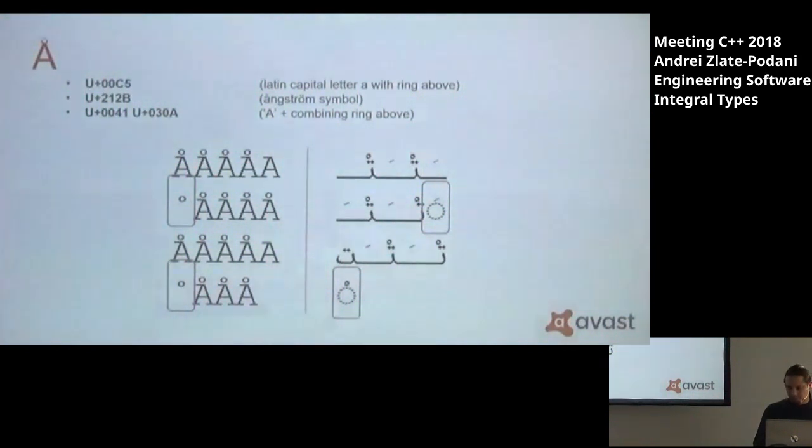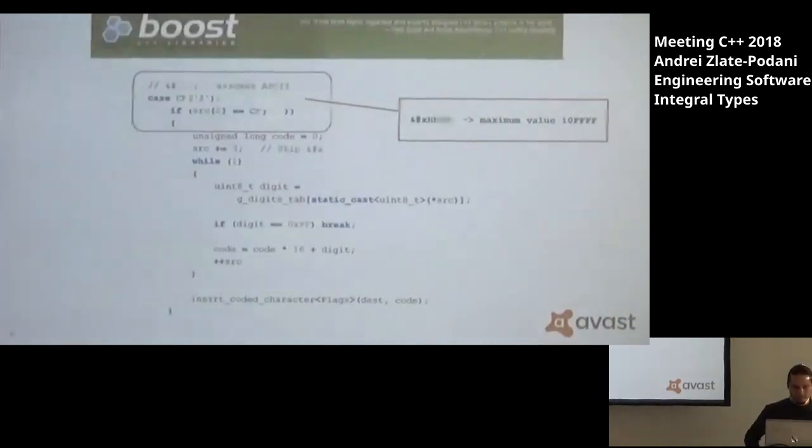Actually unicode has a lot of consequences for manipulating strings other than this one and things which come to mind is comparing strings, sorting them, language depending stuff, it's really complicated and since the C++ standard actually ignores the subjects completely everyone has to do it on their own.